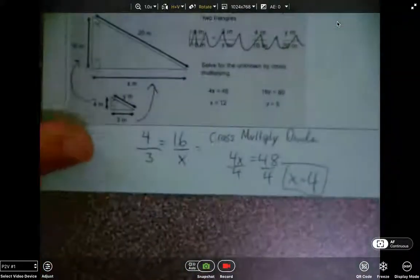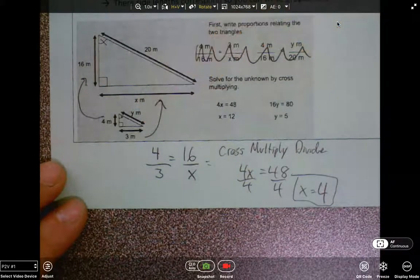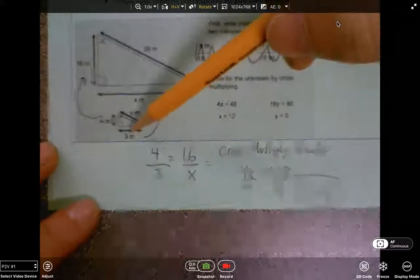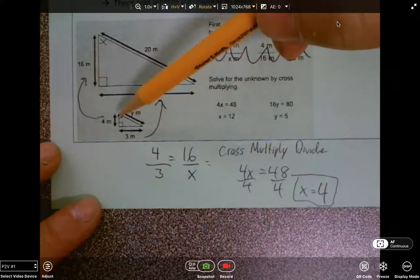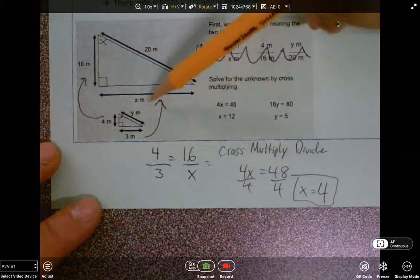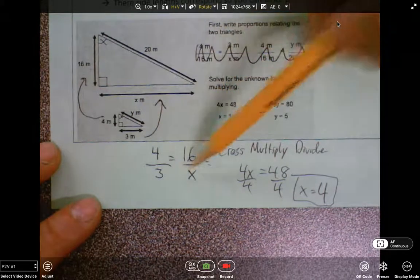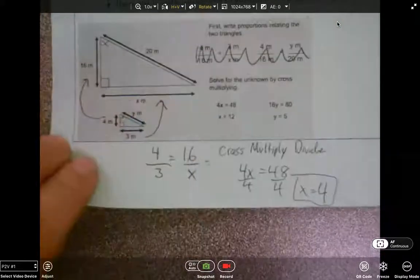We learned how to find missing side lengths from similar figures simply by looking at corresponding sides and making a proportion. So here you can see 4 goes to 16. So when I set up my proportion, I go 4 and then across is 16. And then 3 goes to x, so 3 goes to x. Cross multiply, divide, and you get x equals 4.